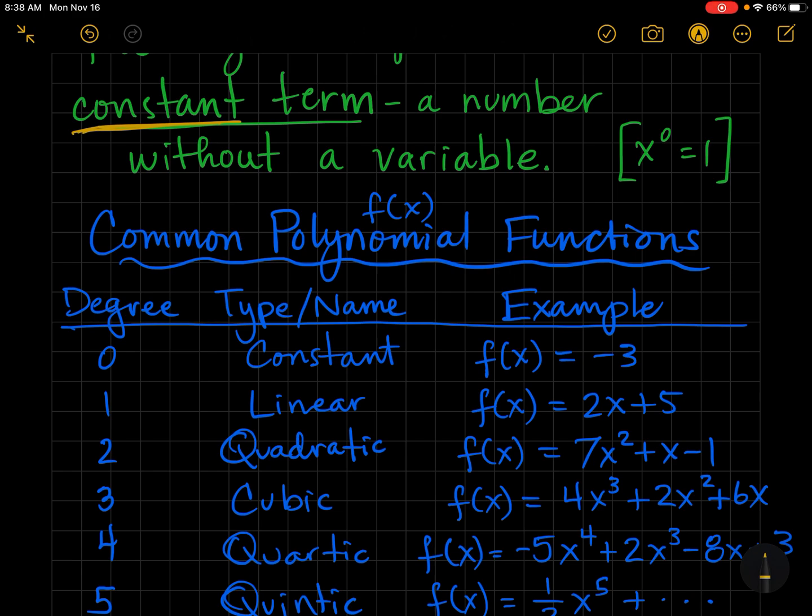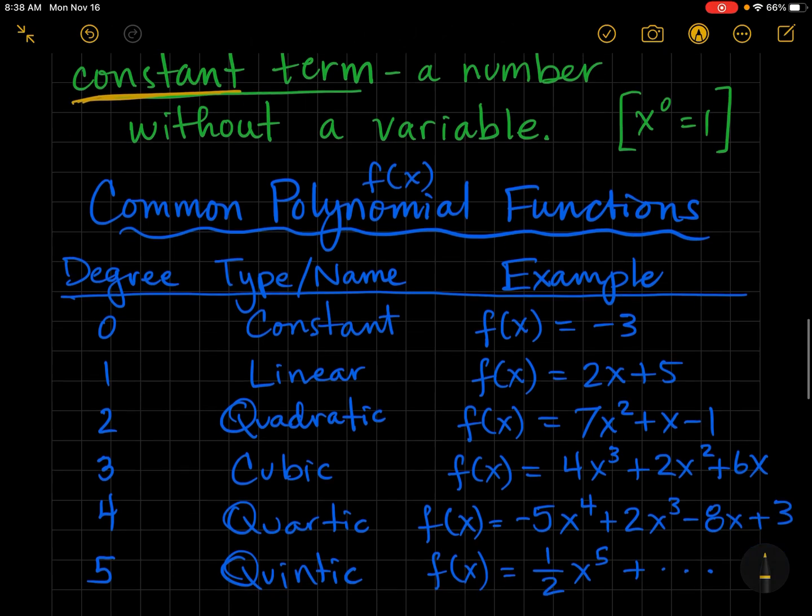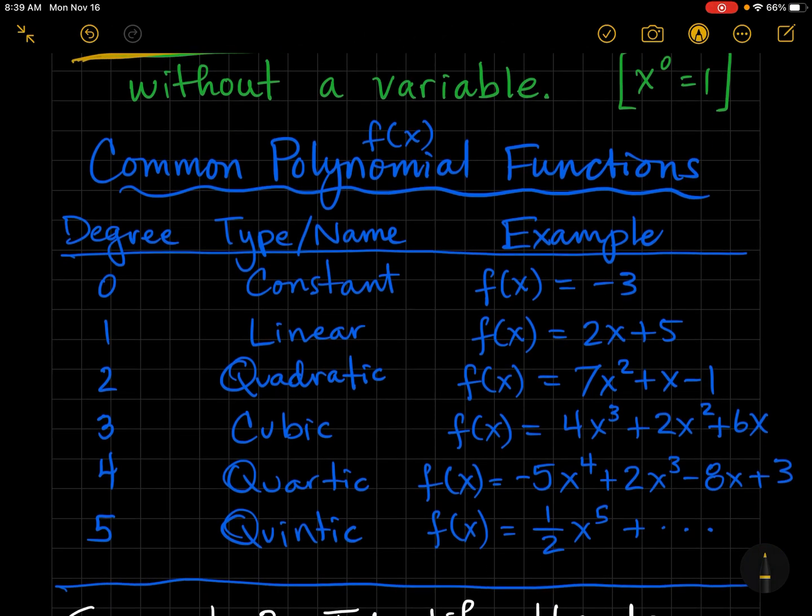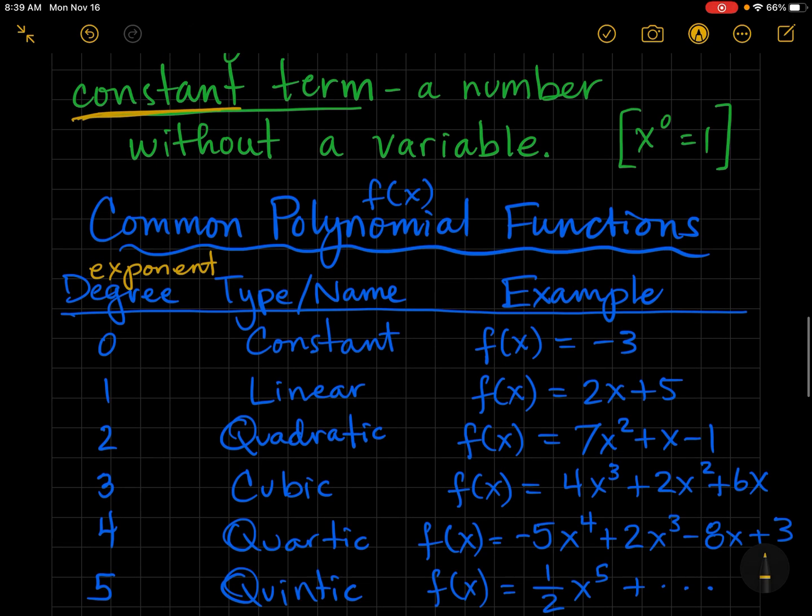Let's review some common names for polynomial functions. If it's degree zero, that means it's a constant term. And really, the degree is the highest exponent. So I want you to notice right here, I put x to the zero power equals one.